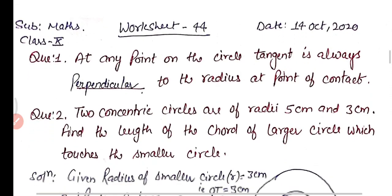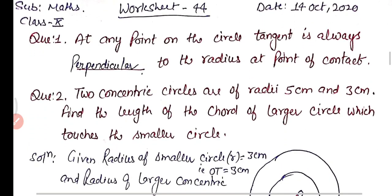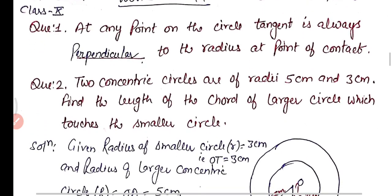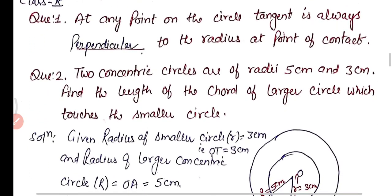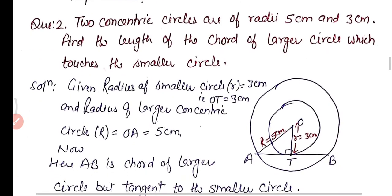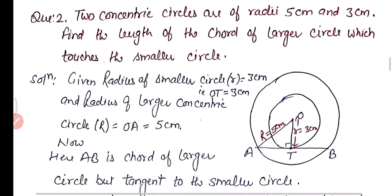Practice question 2: Two concentric circles have radii 5 cm and 3 cm. Find the length of the chord of the larger circle which touches the smaller circle.